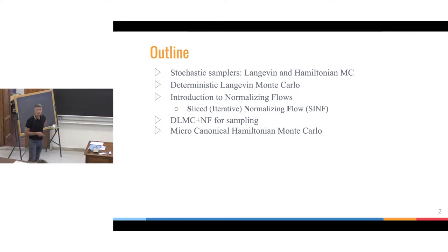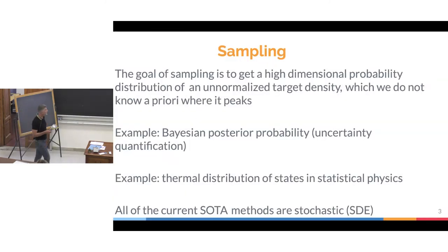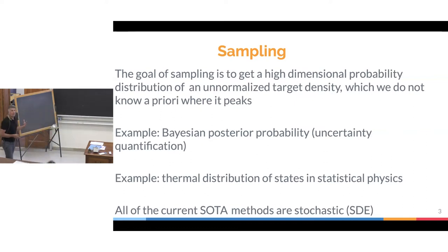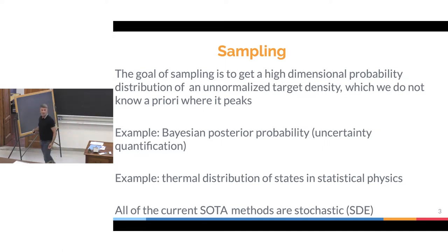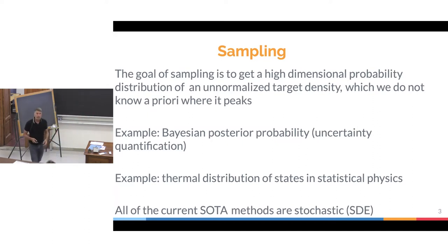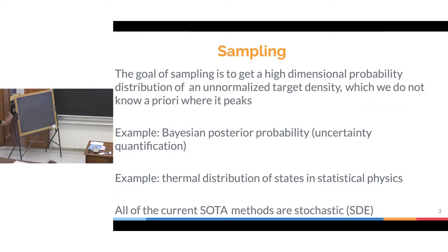What do I mean by sampling? The goal of sampling is to get particles or samples which follow a target probability distribution. This is usually a hard problem because it's high-dimensional, and we don't know where the target distribution peaks, or what its volume is. The typical set might not be at the peak. These issues make sampling different from optimization, where the goal is just to find the peak of a function.